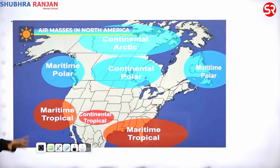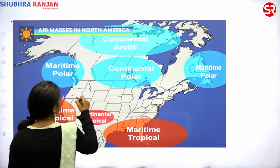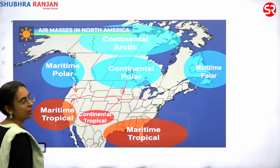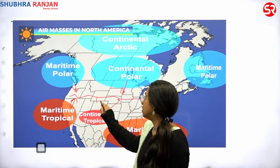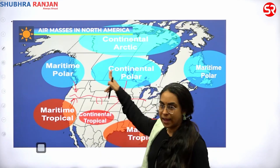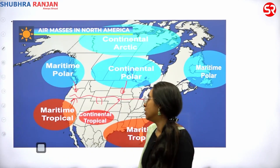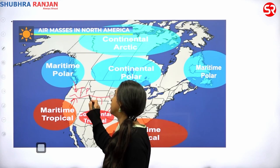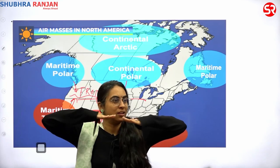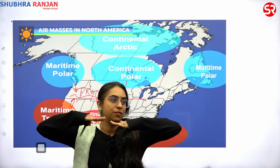When air masses start interacting — these are very big packets of air — when they start interacting, they create what is called a front. When air masses come face-to-face, you call it a front.